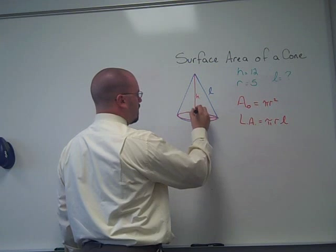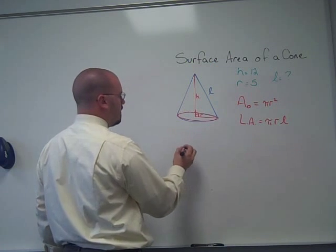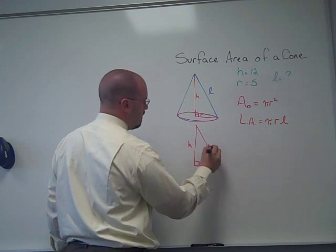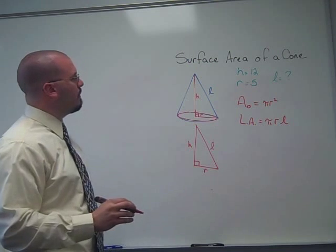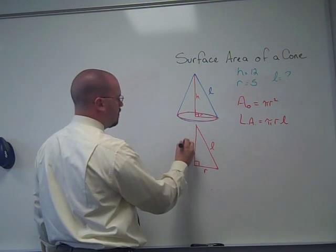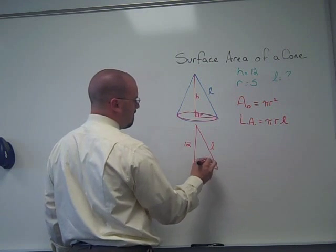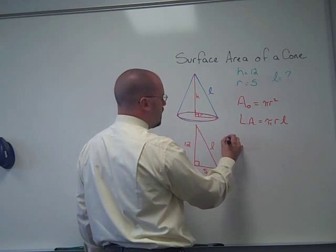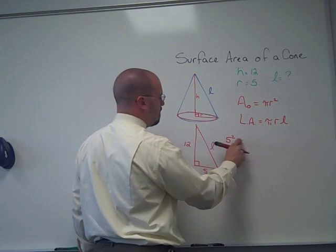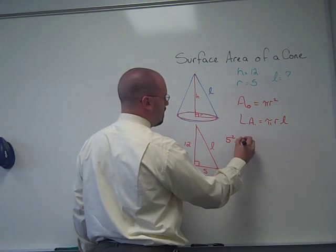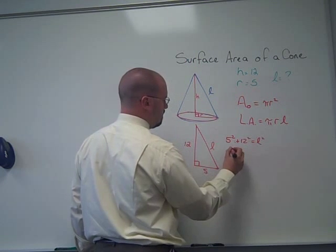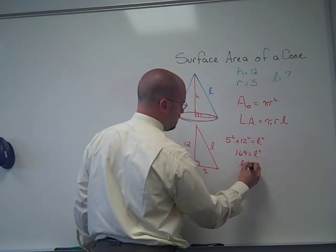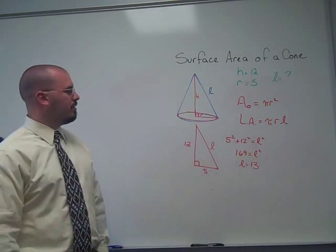Now, the height and radius of a cone are perpendicular. So inside that cone, there is this right triangle with h, r, and l as the hypotenuse. We know that the height is 12, the radius is 5, and since it's a right triangle, we can use the Pythagorean Theorem, or this is actually a Pythagorean Triple, to define the slant height. Alright, so our slant height is 13.